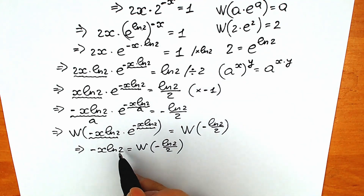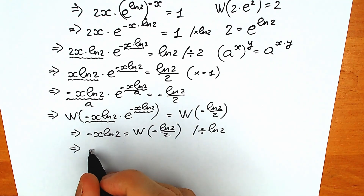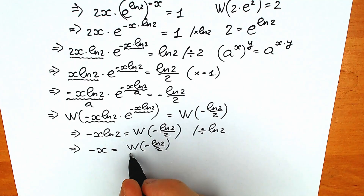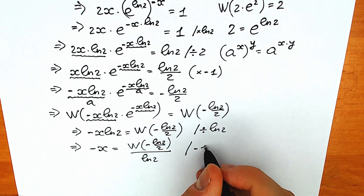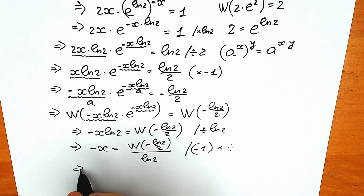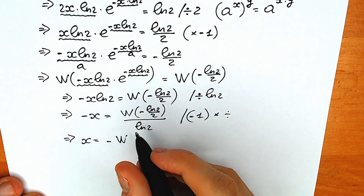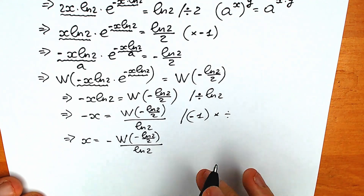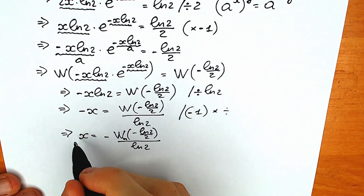Next, we divide both sides by natural log 2, because we need to find x, not minus x natural log 2. As a result, we have minus x equal to W of minus natural log 2 over 2, divided by natural log 2. And the final step: since we have a minus sign, we multiply both sides by minus 1. So our x equals minus W_n of minus natural log 2 over 2, all divided by natural log 2 — where n represents the branch of the Lambert W function.